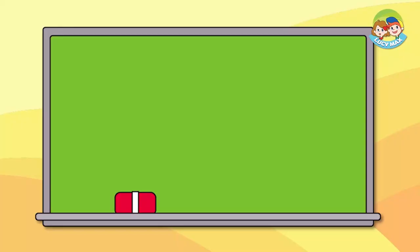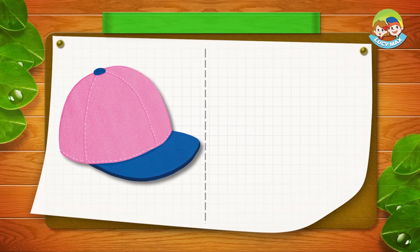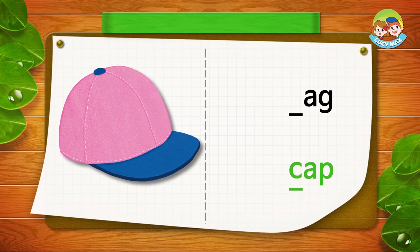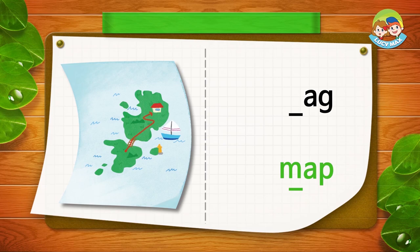Here you will see AG and AP with a picture. Put a letter in the blank before AG or AP to make a word. We will do it together. This is a picture of a cap — we have to put C in the blank before AP. Cap. This is a map — where do we put M? We put it in the blank before AP. Map.